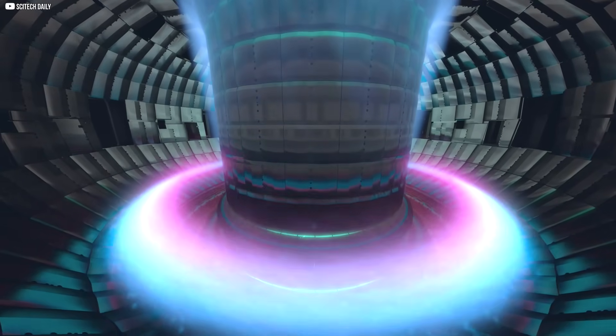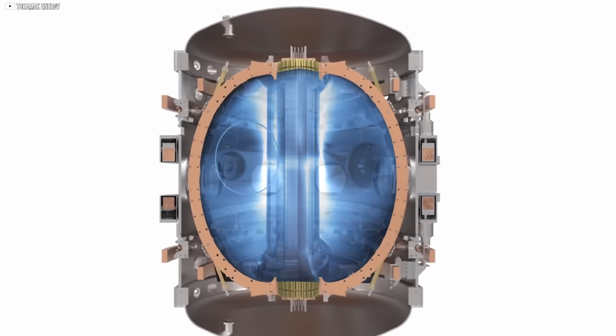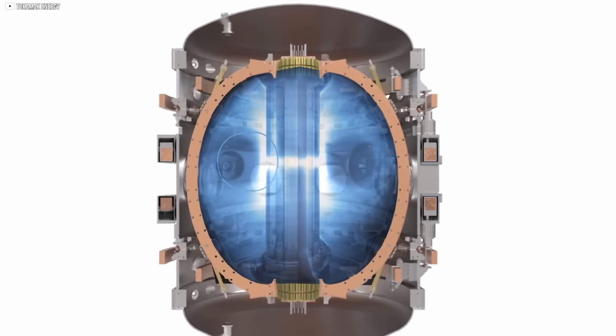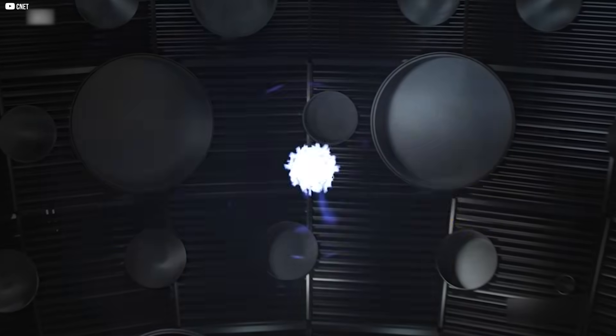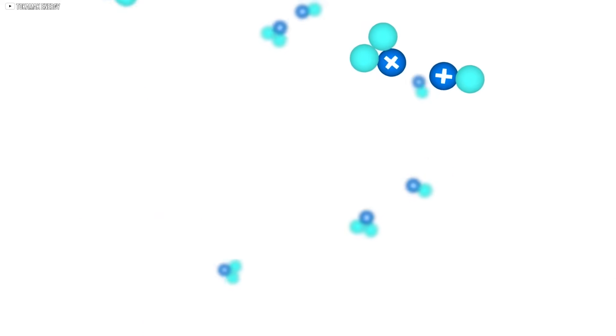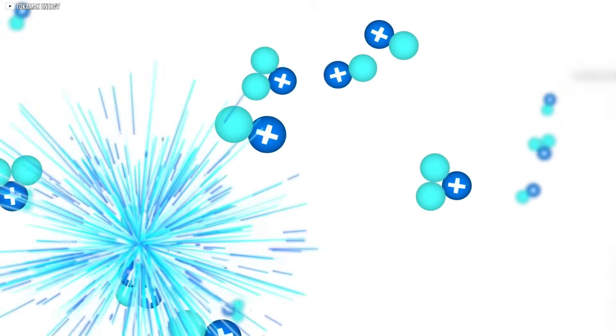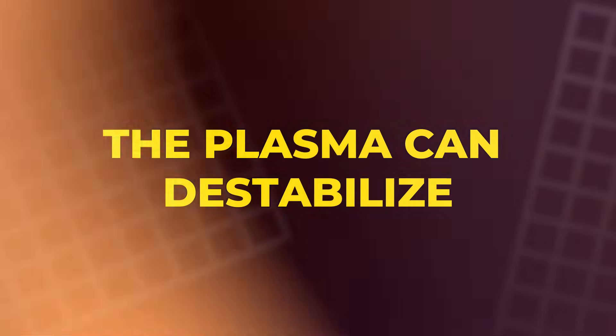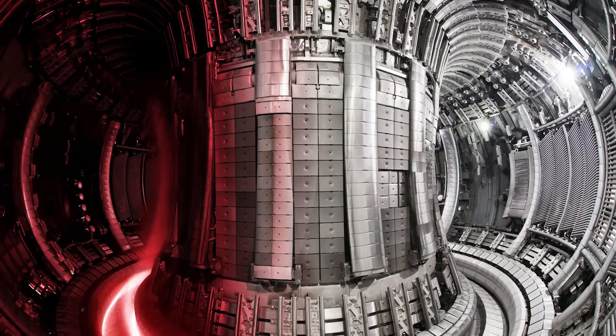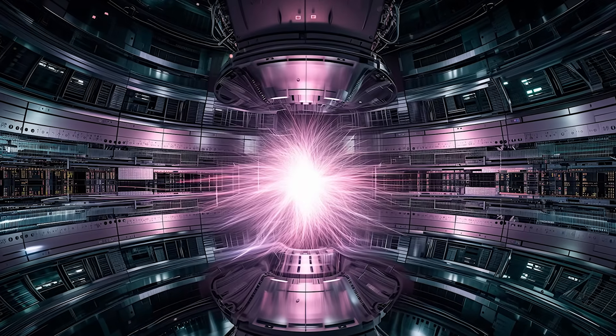And how long we can keep the energy from escaping. Energy confinement is about holding the heat, but ion density—how tightly packed the fuel is—might be even more important. More ions mean more collisions. More collisions mean more fusion reactions. But packing too many ions causes problems. The plasma can destabilize. Magnets struggle to contain it.